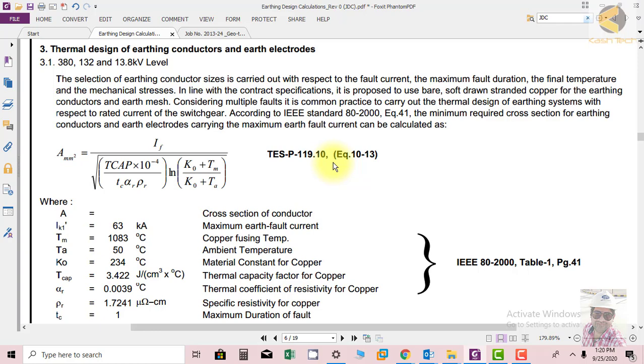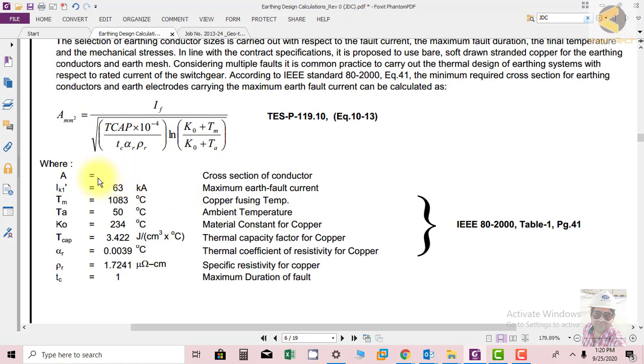In special cases, as per their requirement, they can increase or decrease the specification of certain equipment. This is the advantage of producing a local TESP. You can see the cross section area equation shown here. Let us discuss what impacts the cross section area.